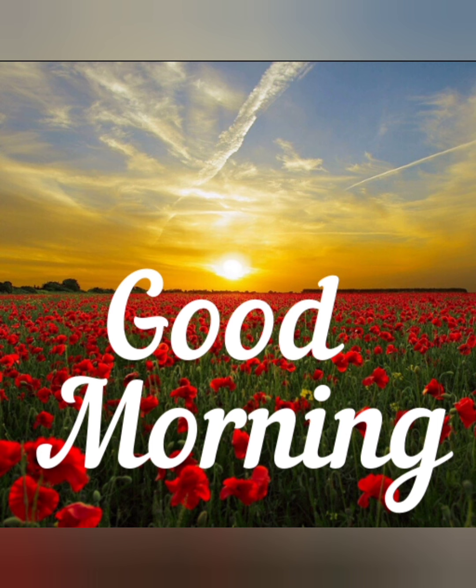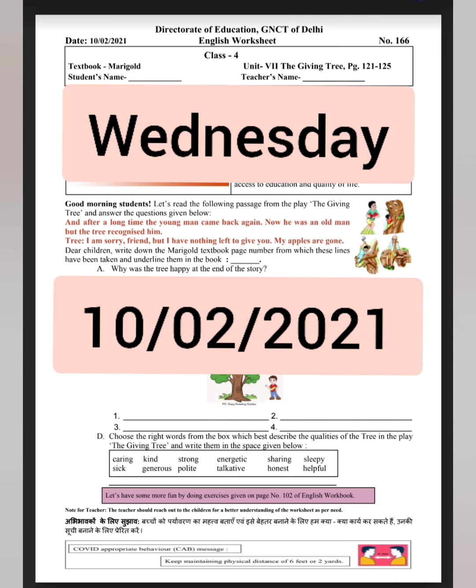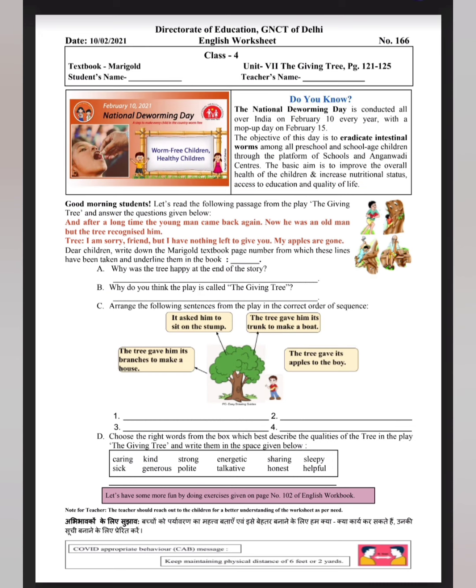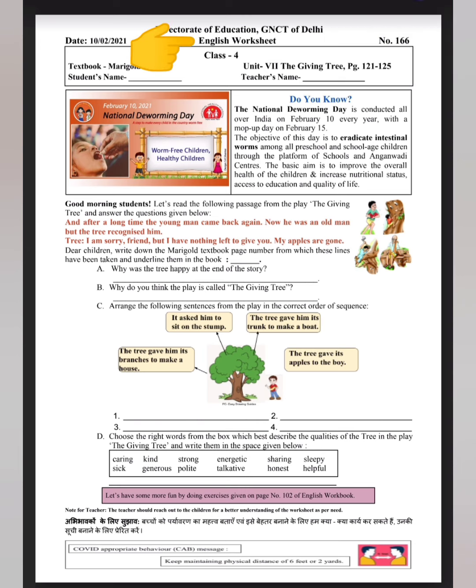Let's start today's worksheet. Today is Wednesday and the date is 10 February 2021. This is worksheet number 166. This is an English worksheet from unit 7, The Giving Tree. This chapter is on page number 121 to 125.